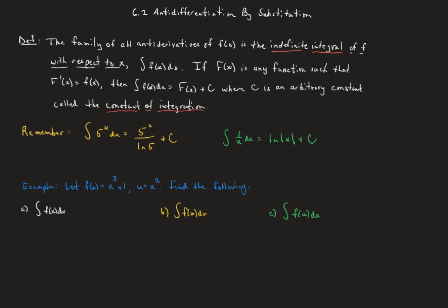In this video, we'll talk about section 6.2, anti-differentiation by substitution. The family of all antiderivatives of f of x is the indefinite integral of f with respect to x, which we denote with this integral sign and no limits of f of x dx. If capital F of x is any function such that capital F prime equals little f, then the integral of f of x dx is capital F of x plus c, where c is an arbitrary constant called the constant of integration.